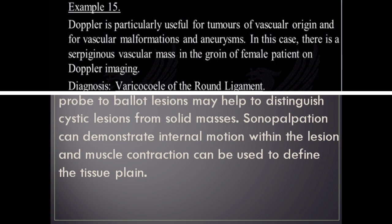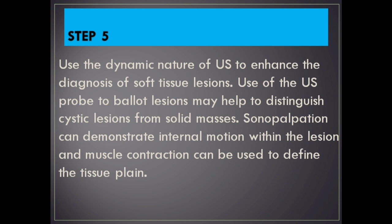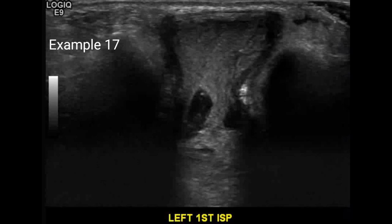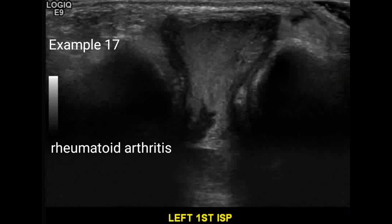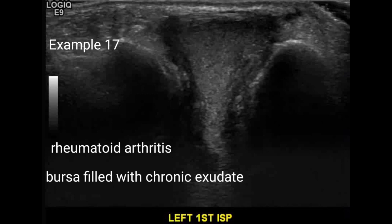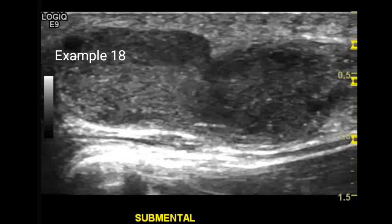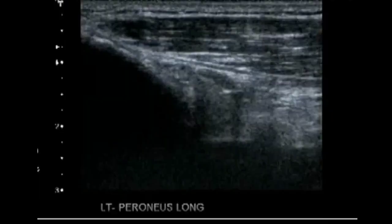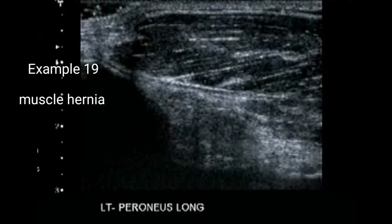Step 5. Use the dynamic nature of ultrasound to enhance the diagnosis of soft tissue lesions. Use of the ultrasound probe to ballot lesions may help to distinguish cystic lesions from solid masses. Sonopalpation can demonstrate internal motion within the lesion, and muscle contraction can be used to define the tissue plane. Example 17: Sonopalpation using probe pressure to compress a lesion can help to identify echogenic cysts and bursae. In this patient with rheumatoid arthritis, the echogenic intermetatarsal mass is confirmed as a bursa filled with chronic exudate; there was no inflammatory component on Doppler imaging. Example 18: In some cavernous hemangiomas, blood flow may be so slow that Doppler imaging is normal; however, on grayscale imaging blood corpuscles may be seen moving within the cavernous spaces. Example 19: Muscle hernias may be occult on MRI but are easily diagnosed by ultrasound with muscle contraction.